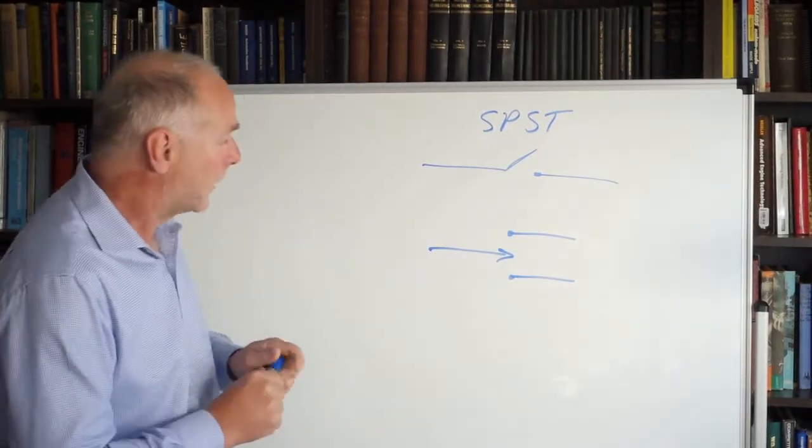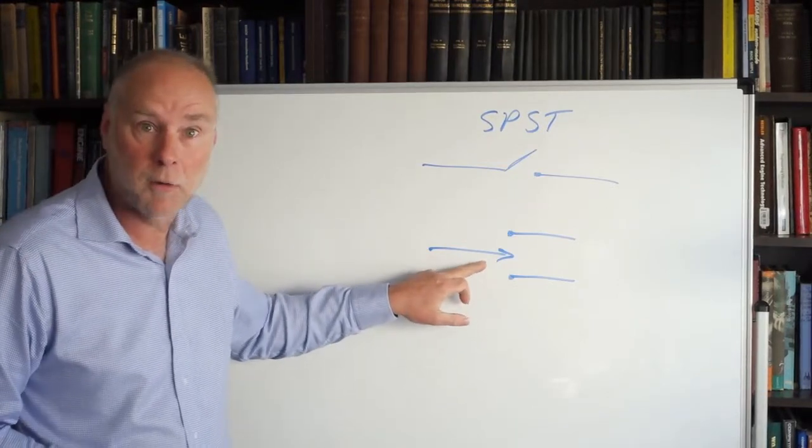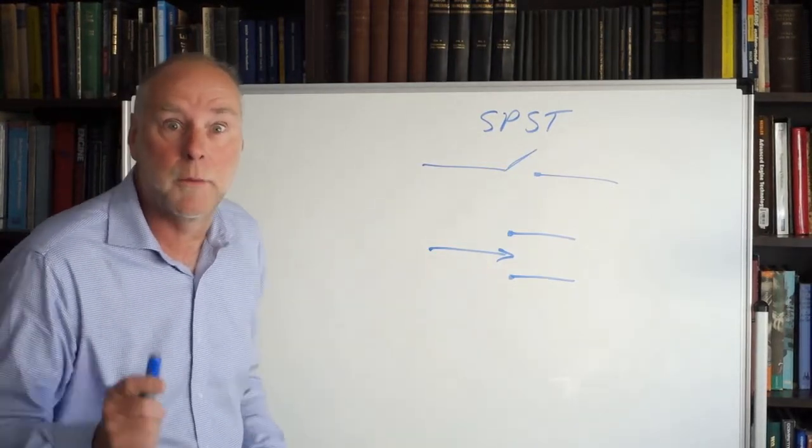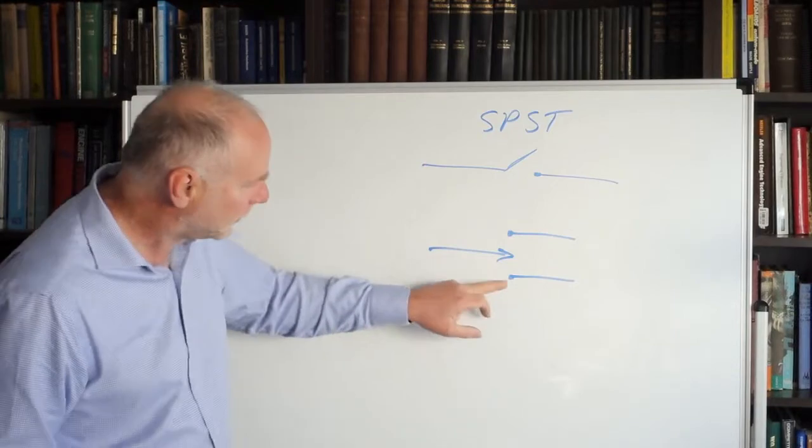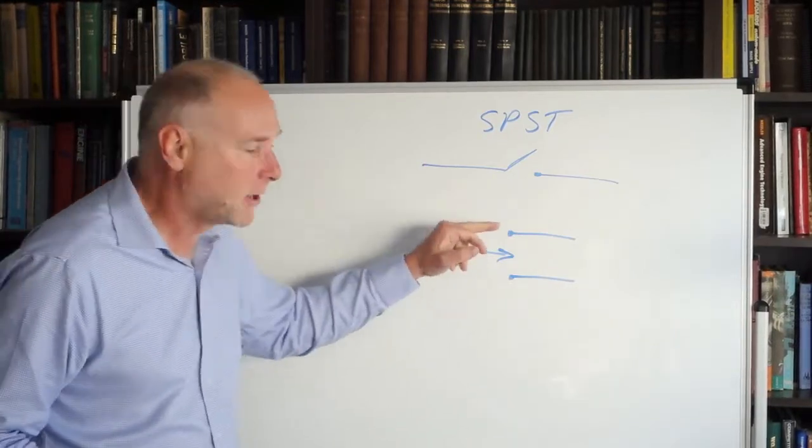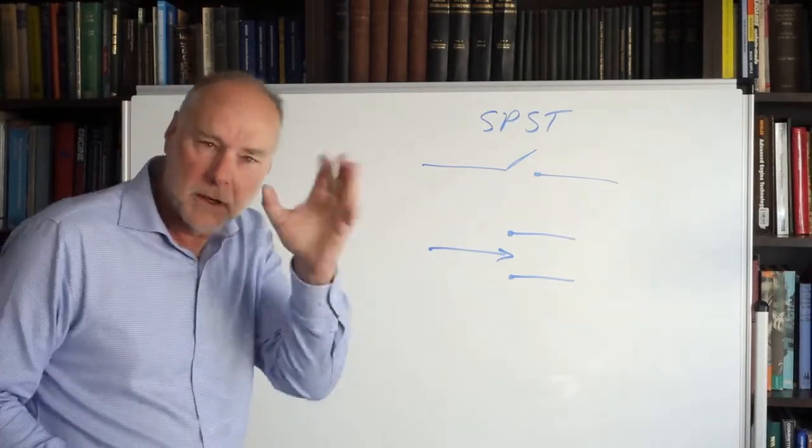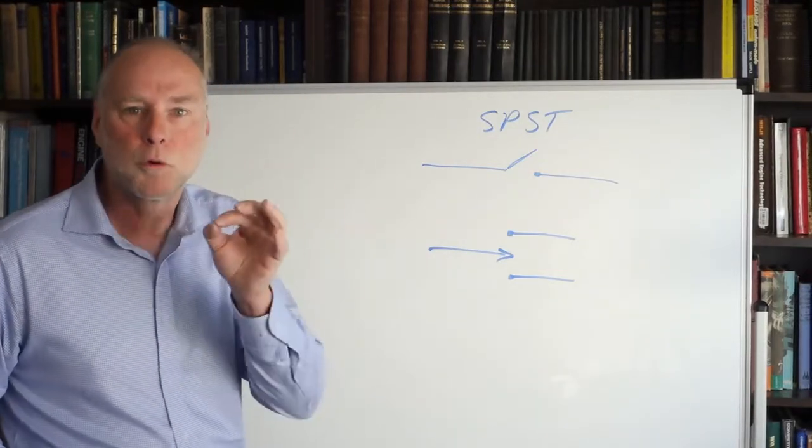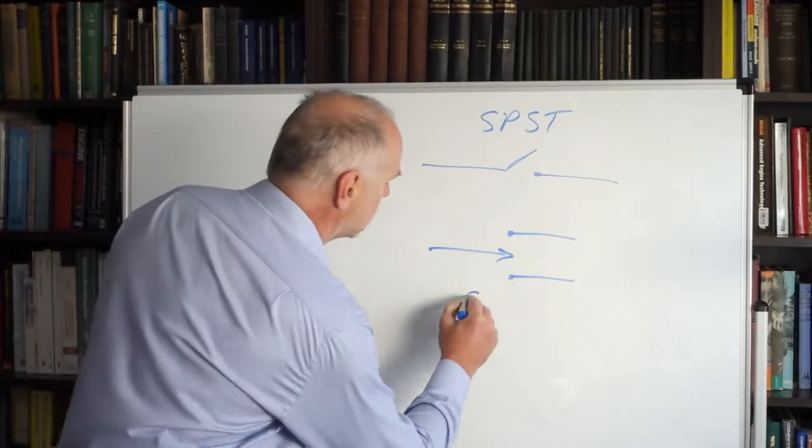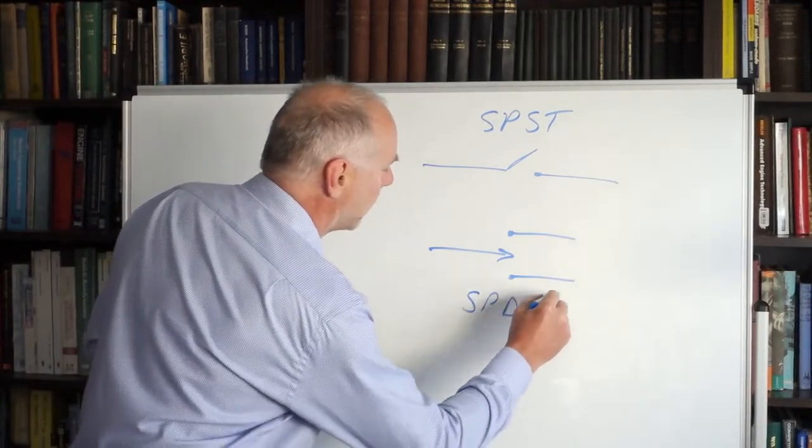Now have a look at this one. We can see it's still only got a single pole, still only got a single input but look where we can switch it. We can switch it down that way or we can switch it up that way. So instead of having a single throw it's got two throws. What do we call it? We call it a single pole double throw switch.